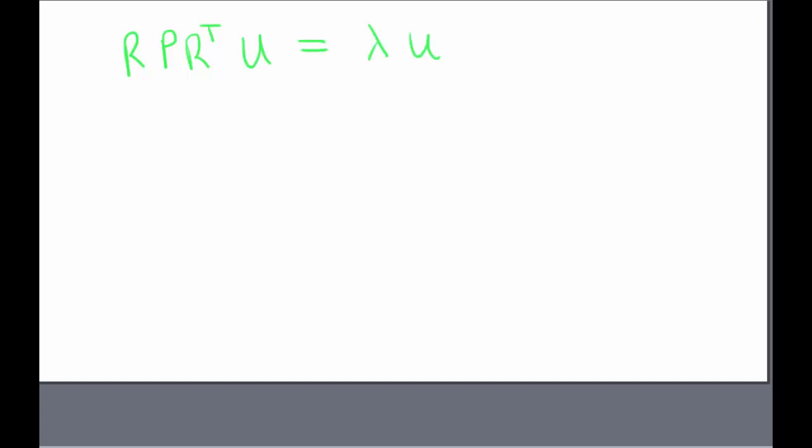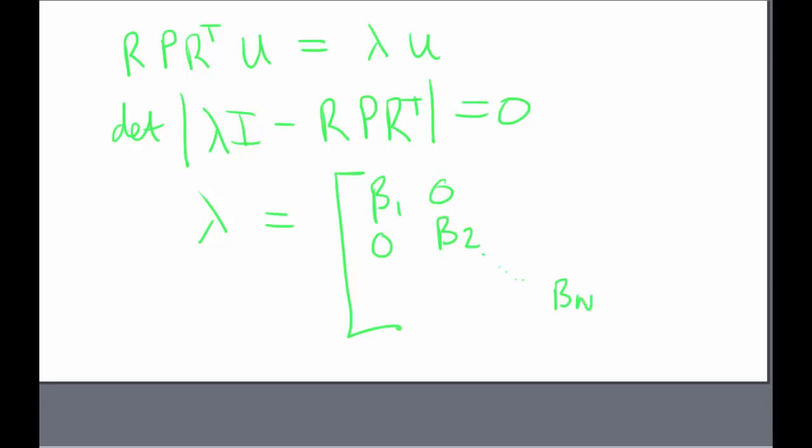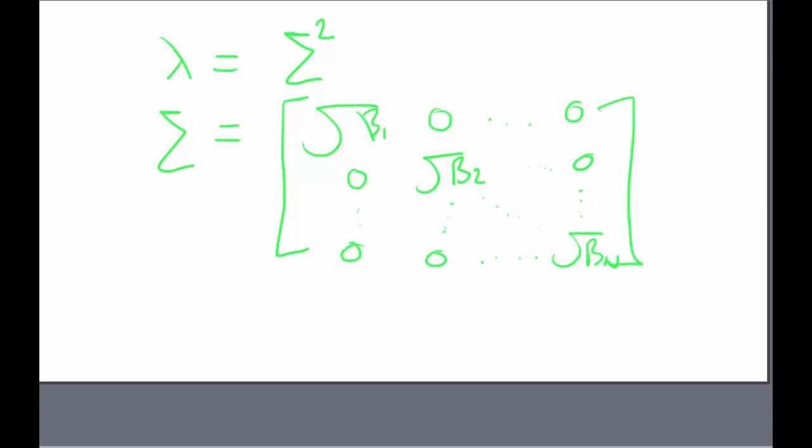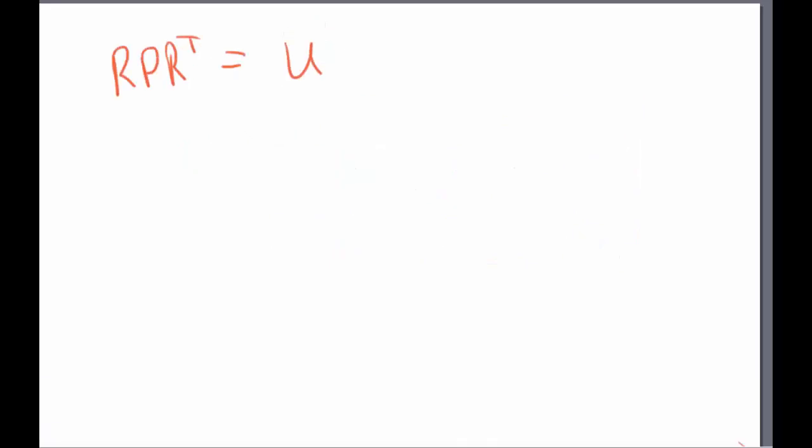So then, just by using the standard eigenvalues formulation, we can find what the eigenvalues actually are by finding the determinant of the equation, and then we can find all the different eigenvalues, beta 1, beta 2, all the way down to beta N. But we know that eigenvalues are not equal to sigma, they're equal to sigma squared. So we know that sigma is equal to the square root of the eigenvalues.